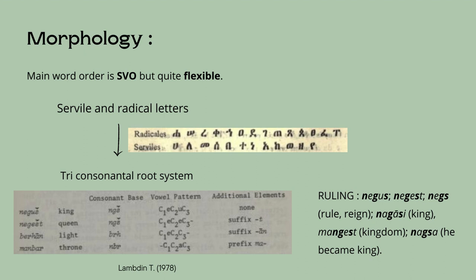The consonantal sequence is called the root of the set of words which share that sequence and can usually be assigned a meaning common to this set. For example, a set of words sharing the common notion of ruling might include words meaning rule, reign, king, and kingdom. Consonants are classified regarding whether they are servile or radical letters. The radical letters are used to form the root of the words, and the servile letters are used to indicate modifications such as gender and number.